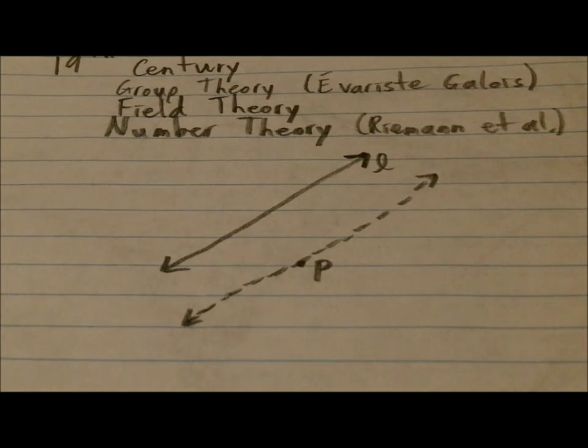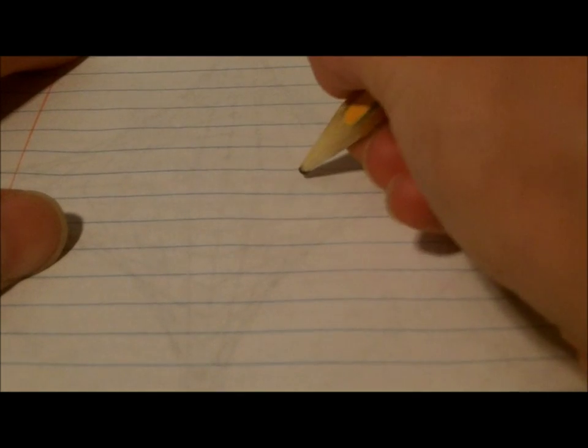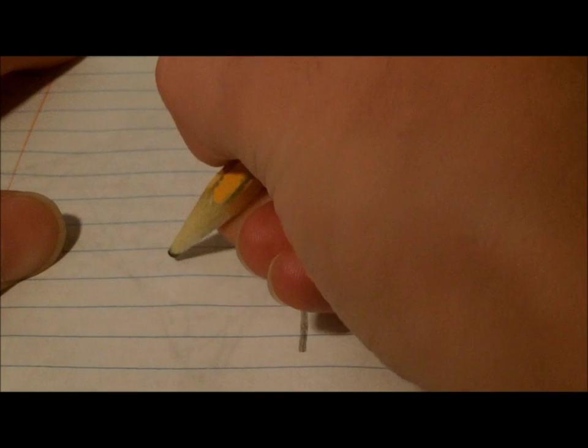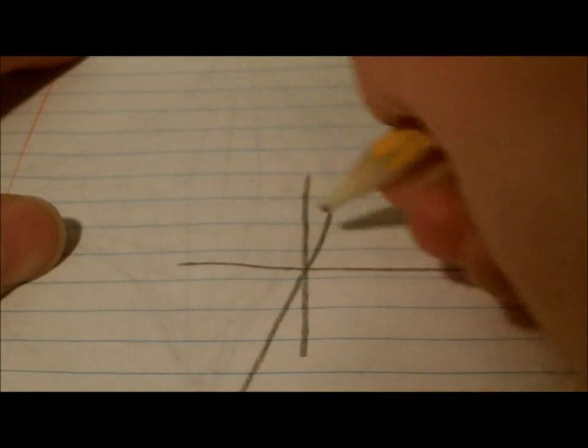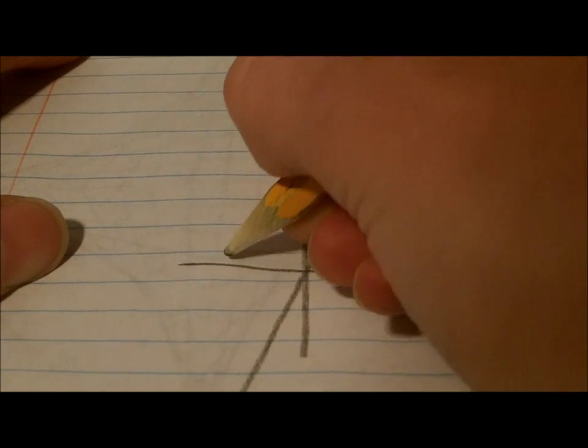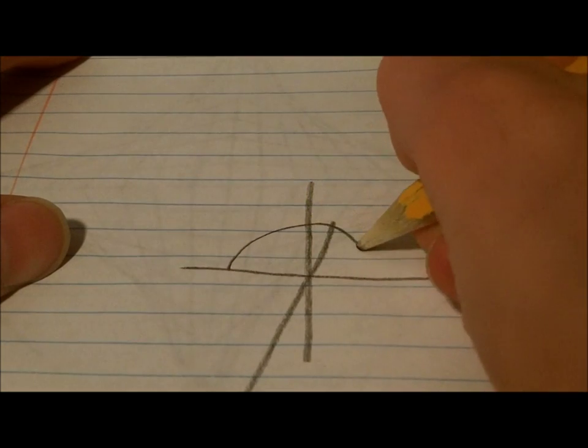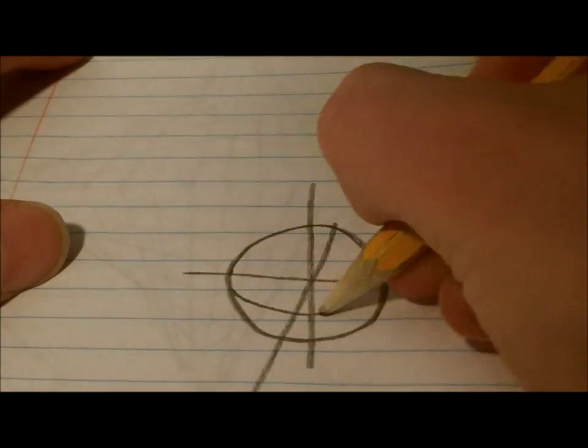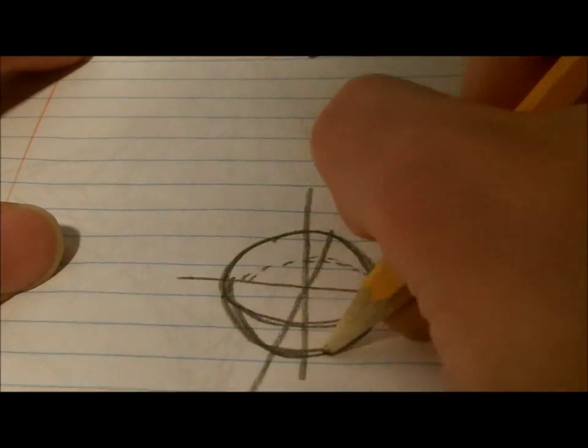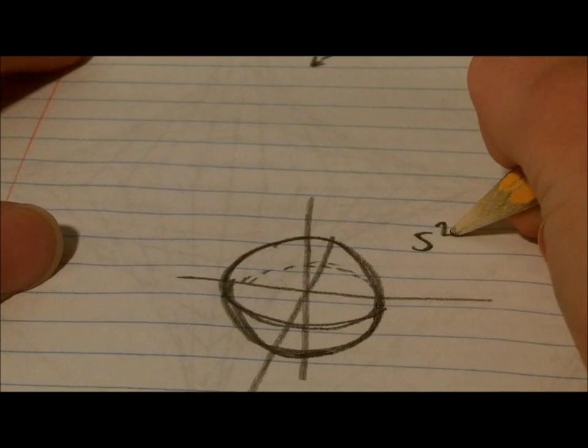Now, a very common diagram you'll see as an example of spherical geometry is, of course, we have the sphere, in three space. So, we have the sphere, S2.